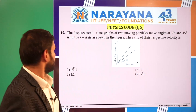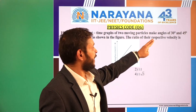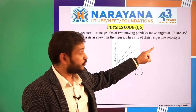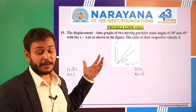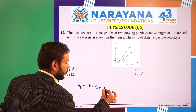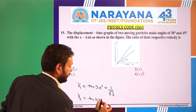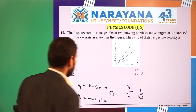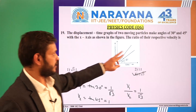Question 19 is an easy kinematics question. The displacement-time graph of two moving particles makes angles of 30° and 45° with the x-axis. The ratio of their respective velocities is — since slope of a displacement-time graph gives velocity. V₁ = tan(30°) = 1/√3, and V₂ = tan(45°) = 1. So V₁:V₂ = 1/√3 : 1 = 1:√3, which is option 4.